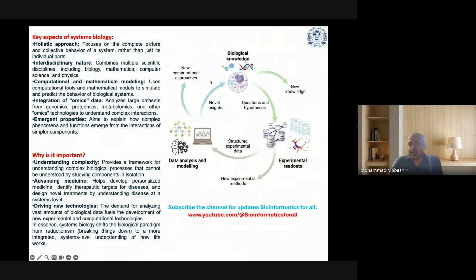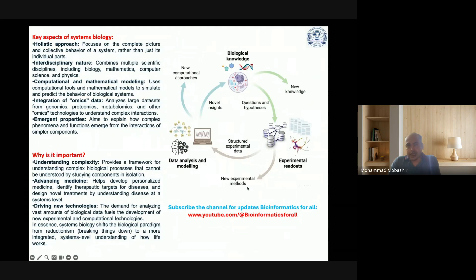The scope of systems biology is very broad and different sets of techniques may be deployed for each research target. It requires collective efforts from multiple research areas such as molecular biology, high precision measurements, computer science, control theory, and other scientific engineering fields. Research needs to be carried out in four key areas: genomics and other molecular biology research, computational studies such as simulation and bioinformatics, analysis of dynamics of the system, and technologies for high precision and comprehensive measurements.